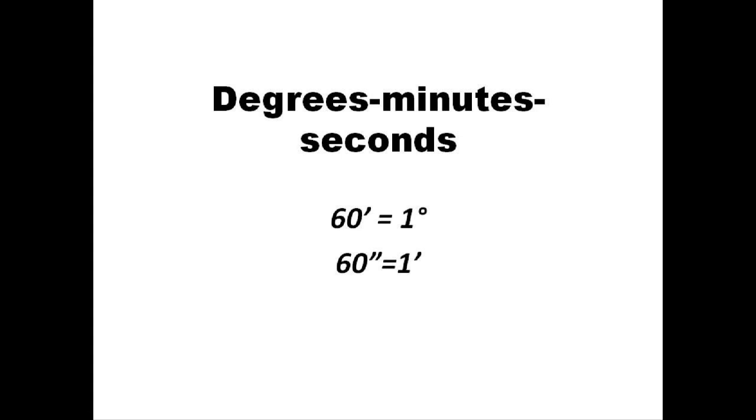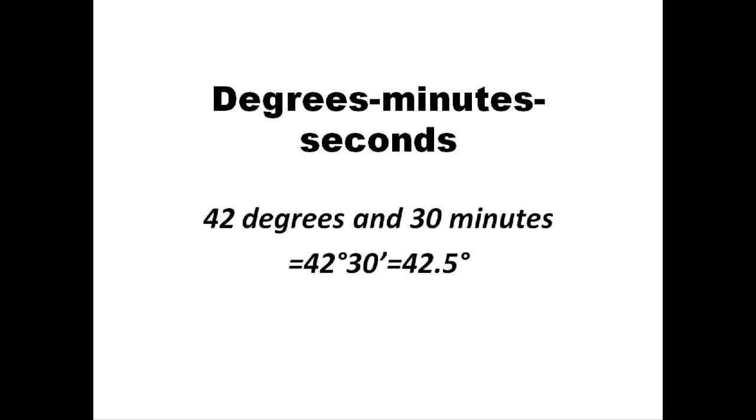Let's take a look at a couple of simple conversions that you can probably do in your head. 42 degrees and 30 minutes would be equal to 42.5 degrees, since 30 minutes is 0.5 or one-half of a degree. Similarly, 54 degrees and 15 minutes equals 54.25 degrees. We've just been dividing the number of minutes by 60 to do the calculation.